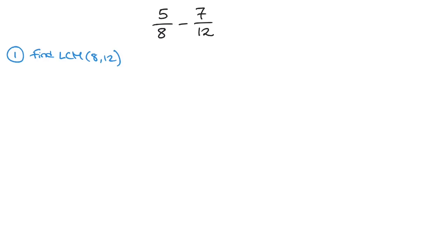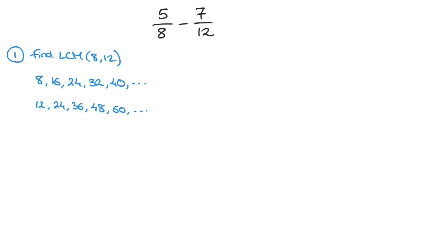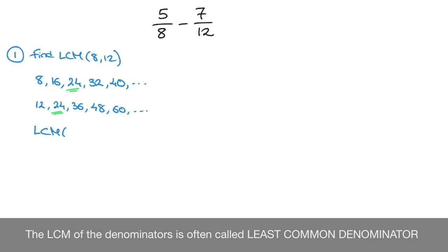To do this, we just list the multiples of 8 and 12. So the multiples of 8 would be 8, 16, 24, 32, 40, and so on. The multiples of 12 would be 12, 24, 36, 48, 60, and so on. We now look for the smallest number both of these lists have in common, and it doesn't take us long to see that the smallest number they have in common is 24. So the LCM of 8 and 12 equals 24.